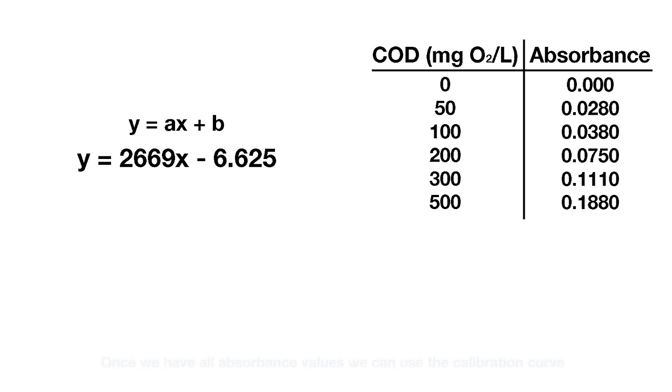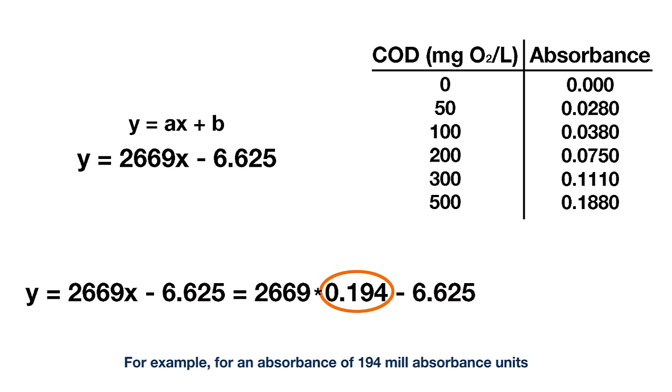Once we have all absorbance values, we can use the calibration curve obtained at the beginning to calculate the COD of each sample. For example, for an absorbance of 0.194 absorbance units,